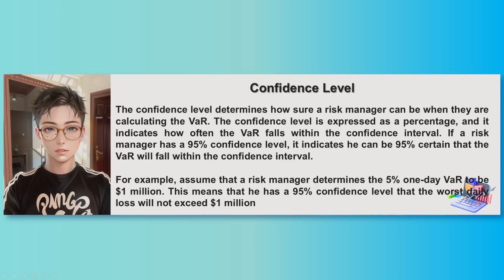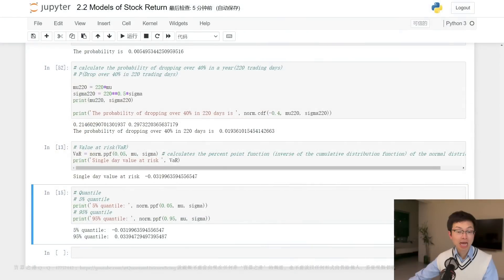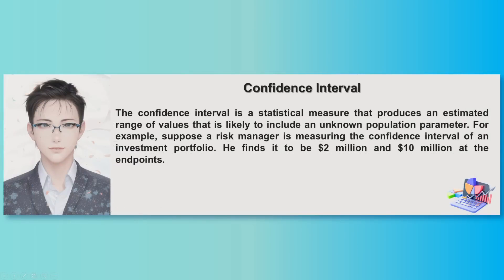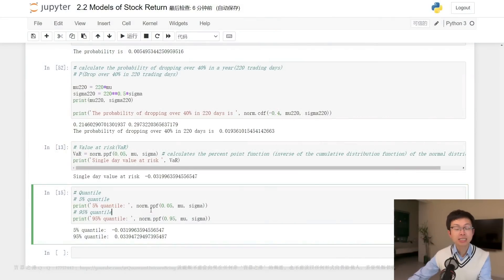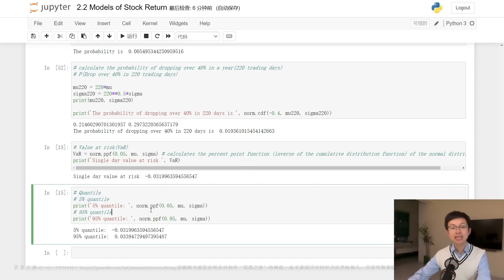Finally, this is our last set of code. We are calculating the five percent and 95 percent quantiles of the daily log return of Apple stock. norm.ppf is a function from scipy.stats that calculates the percent point function, or quantile function, of the normal distribution. The first argument is the probability of interest, ranging from zero to one, and the second and third arguments are the mean and standard deviation of the distribution respectively.